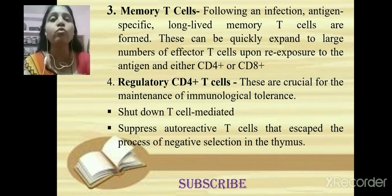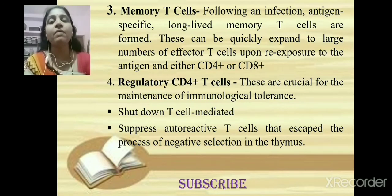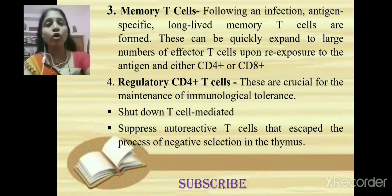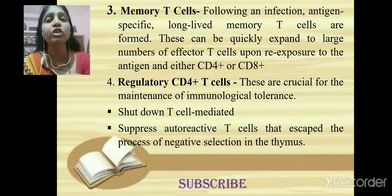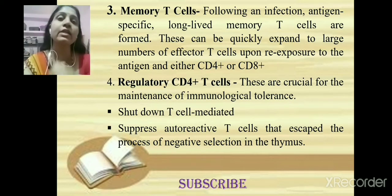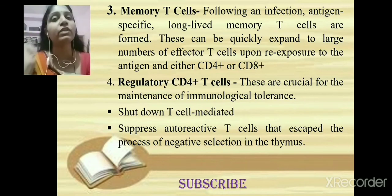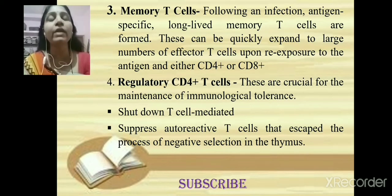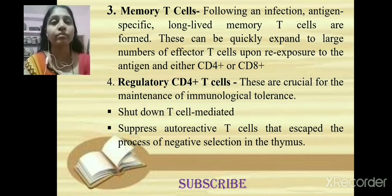Regulatory T cells are CD4-positive T cells with a crucial role in maintaining immunological tolerance. While it is important to fight and remove antigens and infectious agents, it is equally important to down-regulate the immune response once the antigen is removed — to shut down T cell-mediated immunity. This function is performed by regulatory T cells. They are also responsible for suppressing autoreactive T cells that may otherwise cause autoimmune diseases.